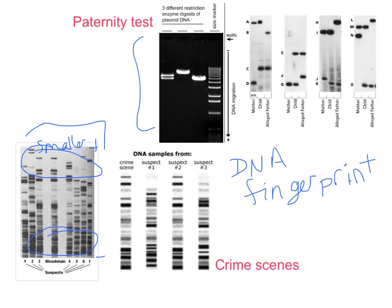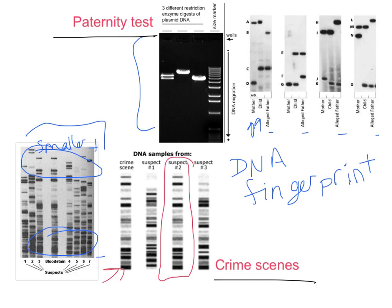Some reasons why DNA fingerprints are useful: paternity tests. You can see here we've got the sample from the mom, the sample from the child, and an alleged father. The child gets half their DNA from mom and half from dad, so every band in the child should either match mom or dad. Another use is crime scenes — a sample of DNA picked up at the crime scene is compared to the banding pattern of suspects. When there's a match, and because that DNA fingerprint is unique to each individual, it's very strong evidence to link that person to the crime scene.